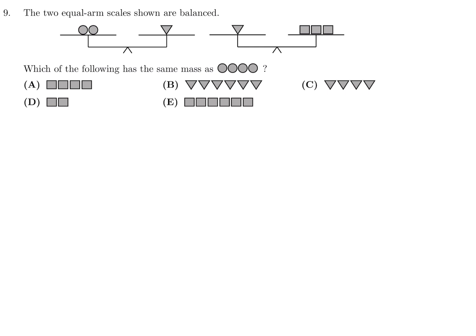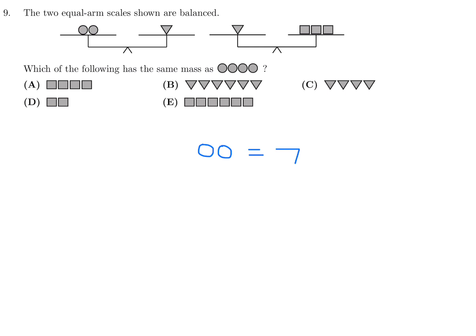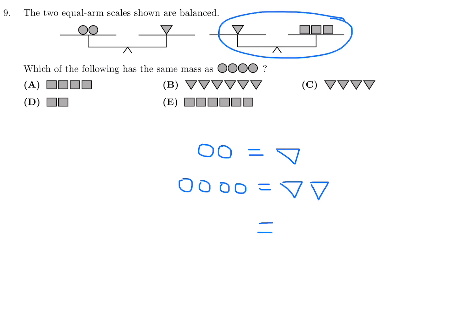Two equal arm scales are balanced. According to the first scale, two circles equals one triangle, so four circles equals two triangles. According to the second scale, one triangle equals three squares, so two triangles equals six squares. Number 9, the answer is E.